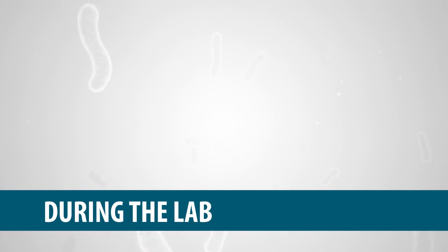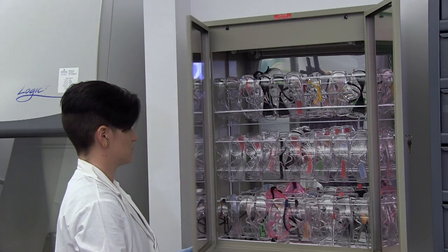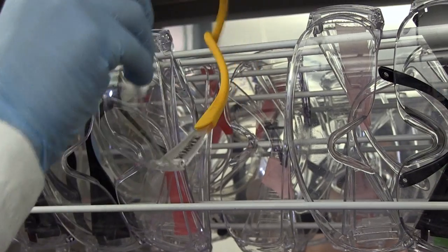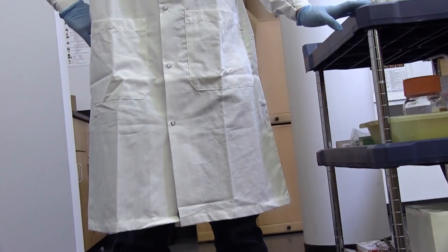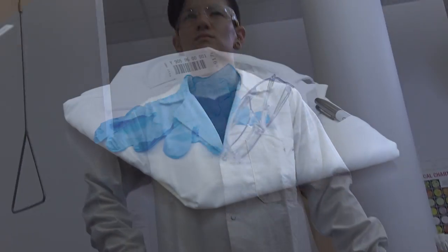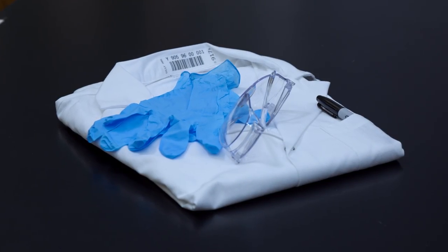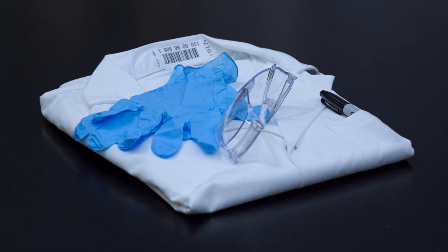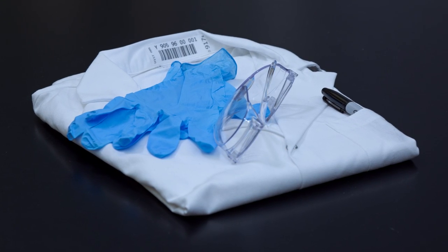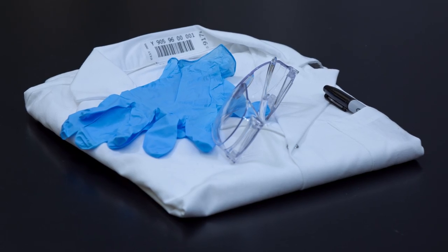During the Lab: Always wear a lab coat, gloves, and safety goggles while working in the lab. The lab coat should only be used during lab and should remain in the lab. Even discounting potential biohazards, a lab coat will protect your clothing. There is a reason many of the chemicals you will be working with are called stains.